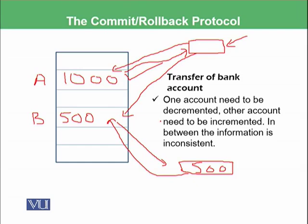So how will our DBMS — database management system — take care that all of these things have been done? This means 1000 has been decremented and the value of Account A is now 800, and 500 has been incremented by 200 so the value of Account B is 700. How will it manage and take care of that?